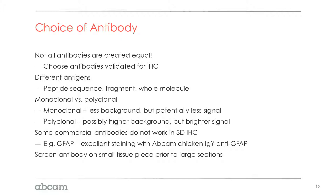The choice of antibody is very important. We have optimized several antibodies with Abcam that allow uniform penetration through one-millimeter mouse brain sections as well as 3D cell culture models in their entirety. Not all antibodies are created equal — you should choose antibodies validated for IHC. Different antigens will behave differently; some antibodies will label easily throughout the entire depth of a one-millimeter section, while others won't penetrate far at all and require significant optimization.